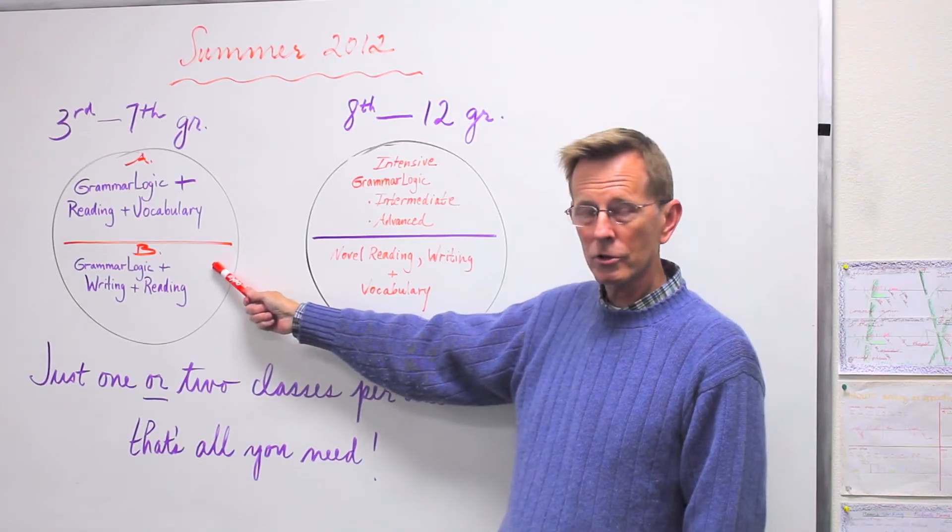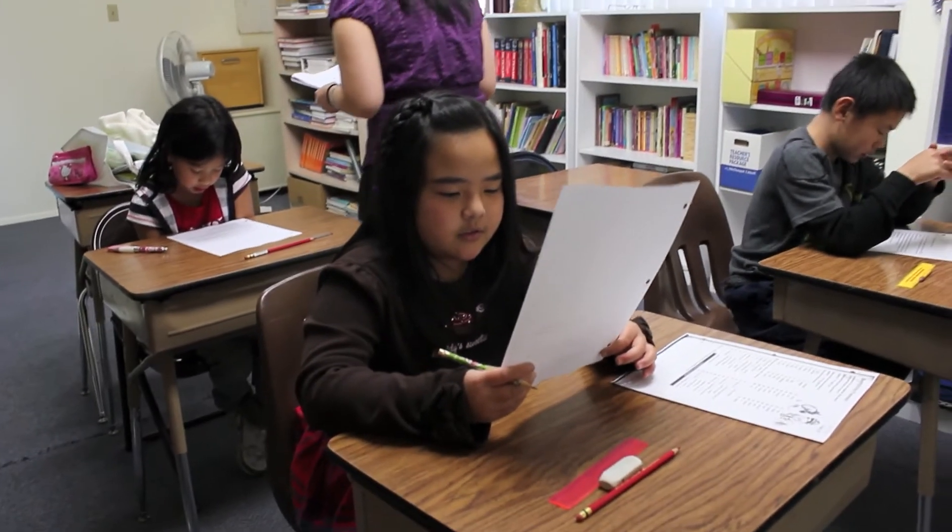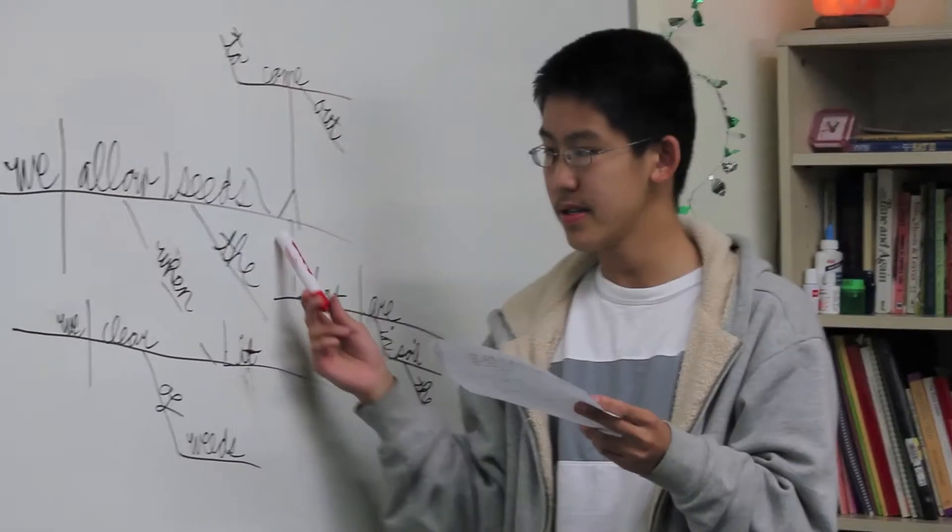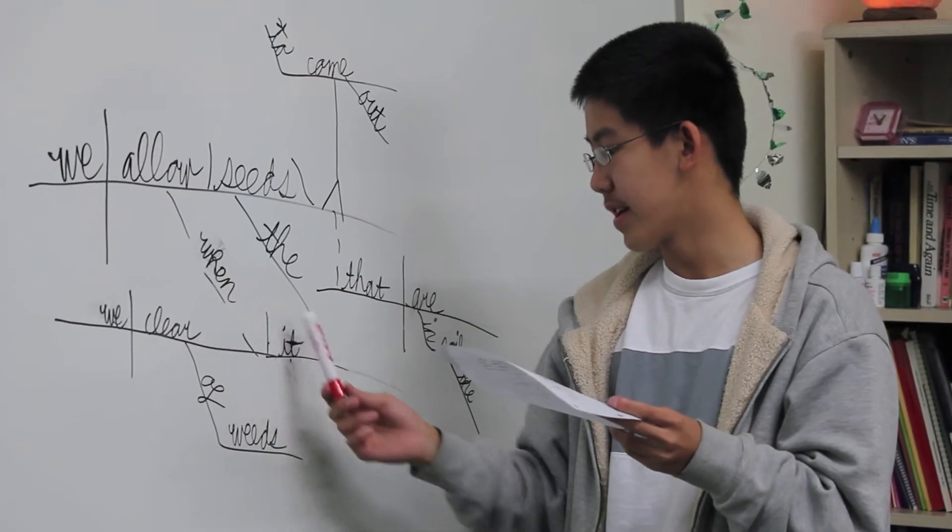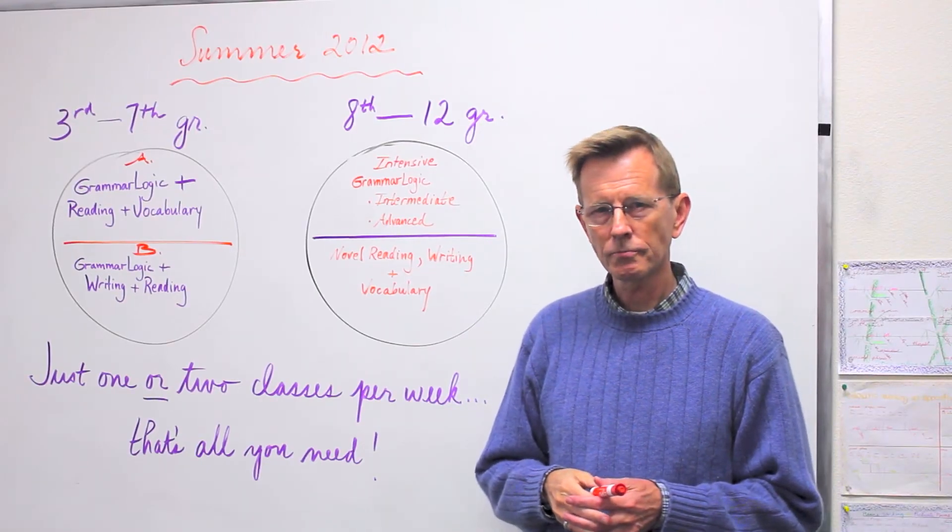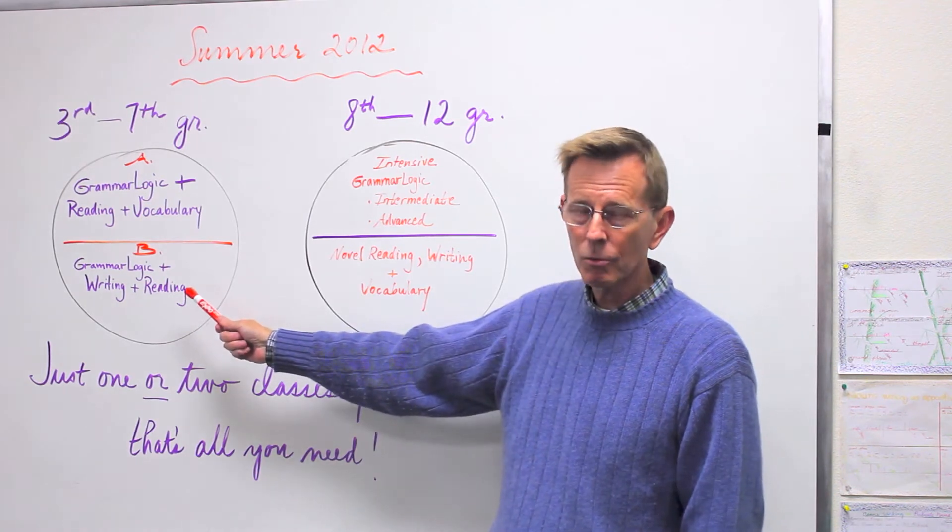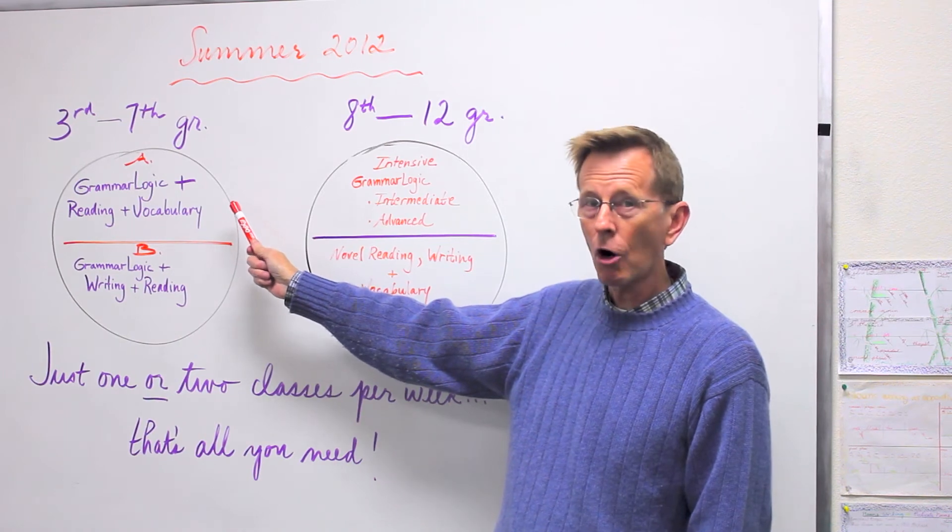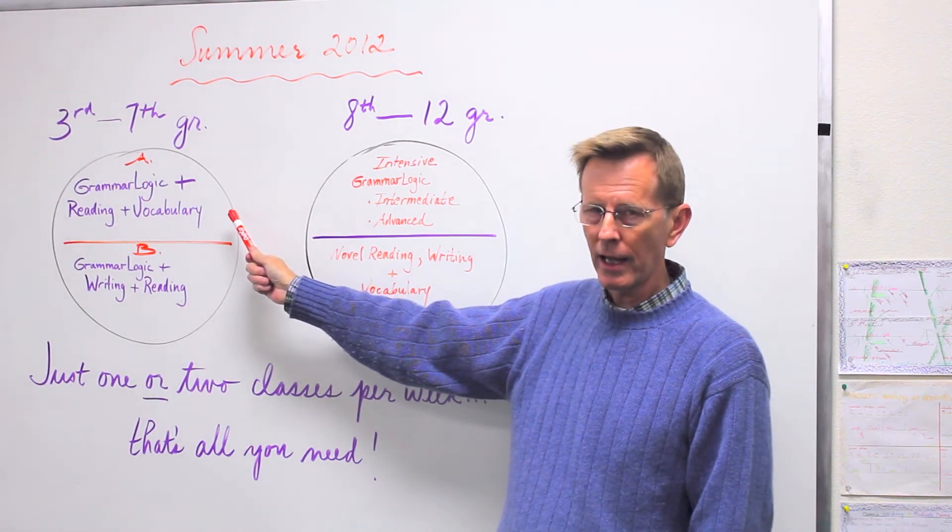Then we have another class, Class B, which connects our Grammar Logic study from Part A to writing and reading. The primary focus is writing, but the writing will be based on certain reading. So the two work together. Class B is available only if your child is taking Class A or has already taken Class A.